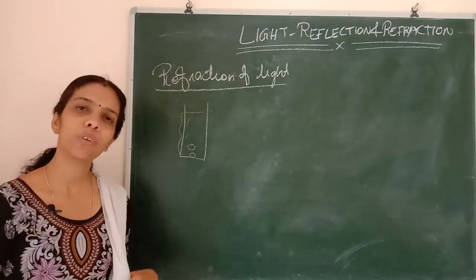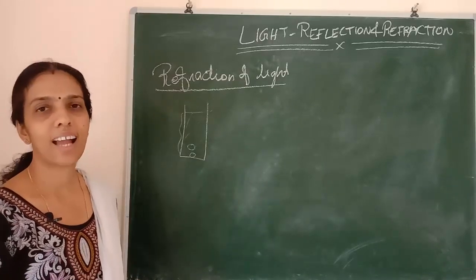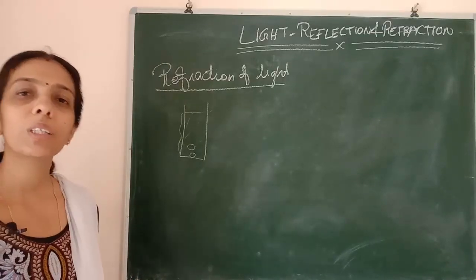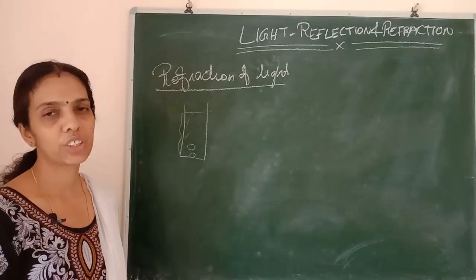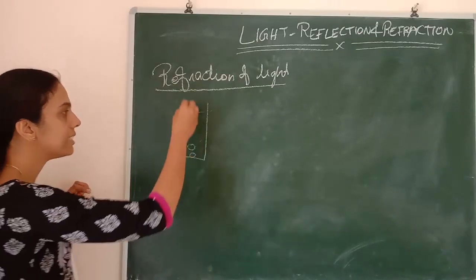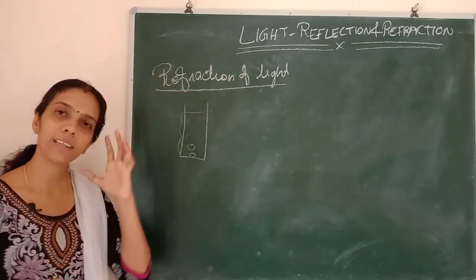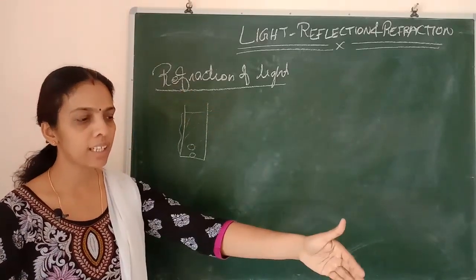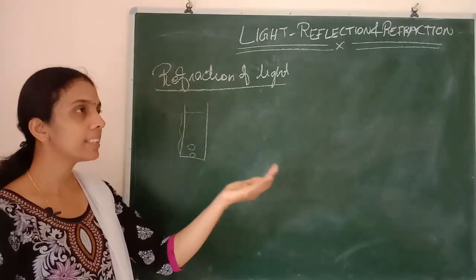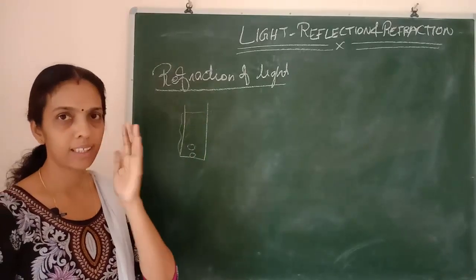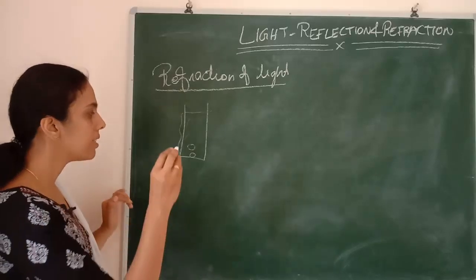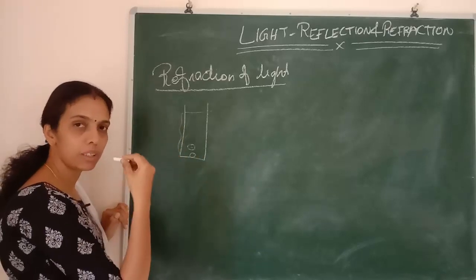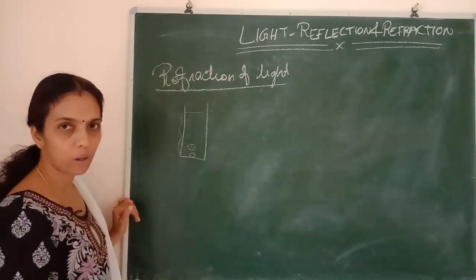These examples you will be knowing, but the reason and the physical explanation — that is what we are going to study now. How do we see an object? A light ray will be incident on that object, and the reflected ray should fall on our eye. Then only we can see the object — first light should fall on it, and then that reflected light should come to our eyes.